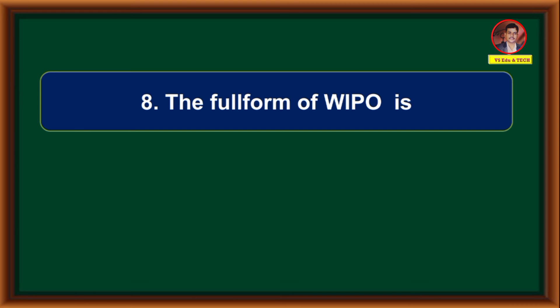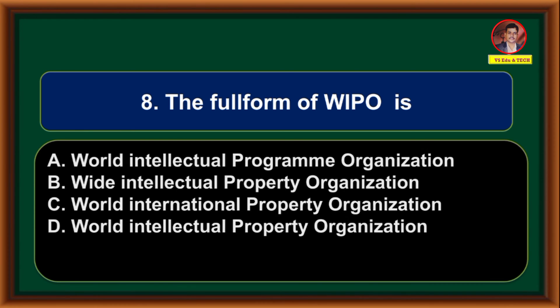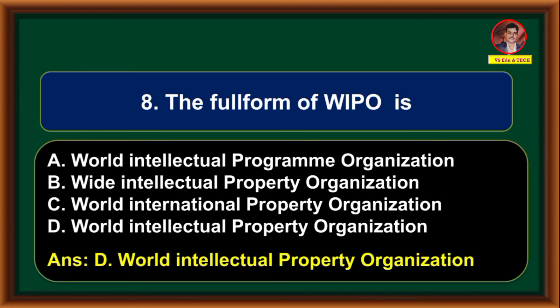The full form of WIPO is: Option A: World Intellectual Programme Organization. Option B: World Intellectual Property Organization. Correct answer is Option D — World Intellectual Property Organization.